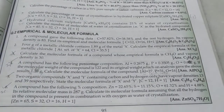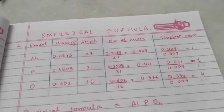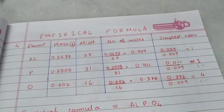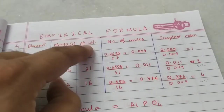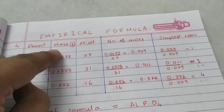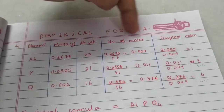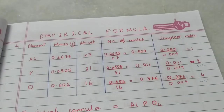The first step is to make a table with five columns: Element, Mass (given), Atomic Weight (given), Number of Moles (to be calculated), and Simplest Ratio (to be calculated). Always write mass first. Number of moles is always mass divided by atomic weight.